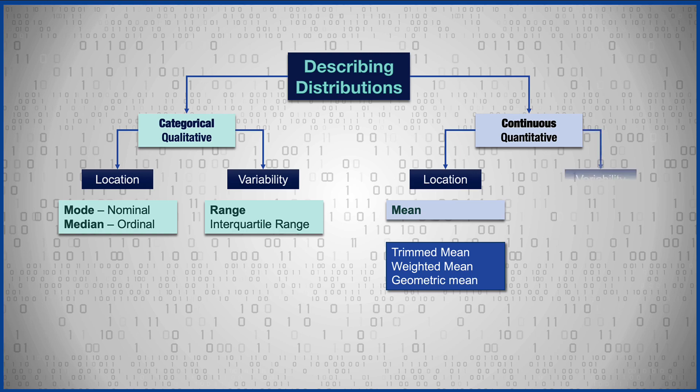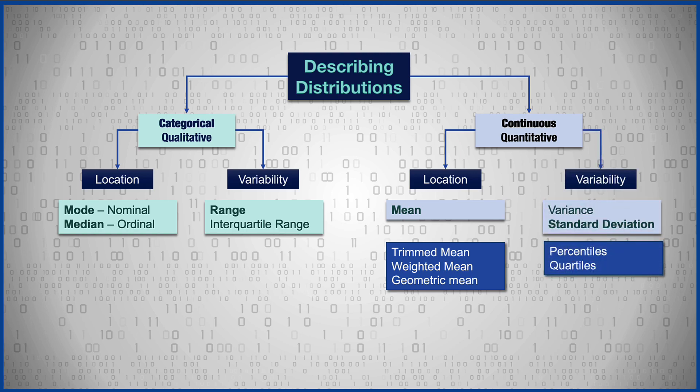For a measure of variability of continuous scale-level data, we will use the standard deviation. To get there we'll also have to calculate a measure of variance. We can also use alternative measures of variability like percentiles and quartiles.